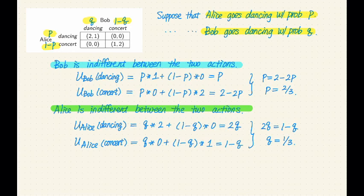Let's look at the first condition — Bob is indifferent between the two actions. Let's calculate Bob's expected utility for each action. For dancing, we look at the left column, and Bob's utilities are 1 and 0. If Alice also goes dancing, Bob gets a utility of 1. If Alice goes to a concert, Bob gets a utility of 0. Alice goes dancing with probability P, giving Bob utility 1; Alice goes to a concert with probability 1 minus P, giving Bob utility 0. So the total expected utility for dancing is P.